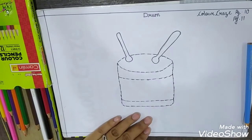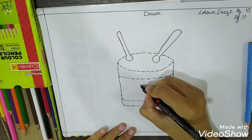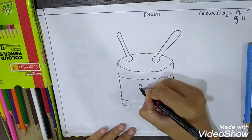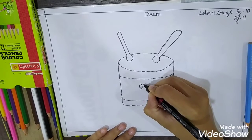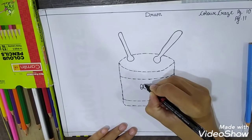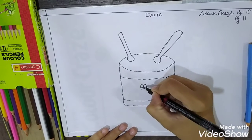But before coloring this middle part we are going to draw two eyes for it. Okay. With the marker or you can draw it with the pencil also.